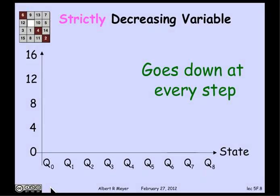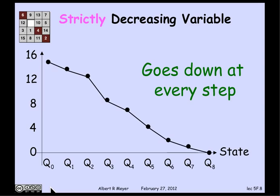This gives a general methodology for proving termination: find a non-negative integer valued strictly decreasing variable — that guarantees the program stops. Sometimes you can also say how long the program will take to stop. As we saw with fast exponentiation, it took not z but log of z steps, because z not only went down at every step, it got halved at every step. In general, a strictly decreasing variable is one that at every transition of the state machine gets strictly smaller.